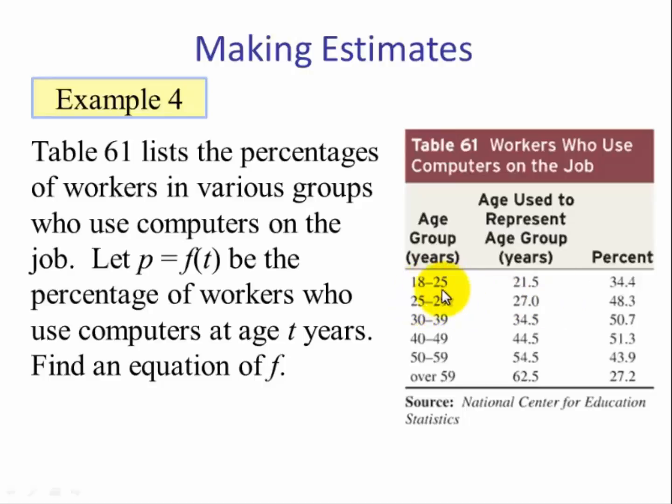So this is the age group, ages 18 to 25. And for the model we will use 21.5 to represent this age group. And the percentage in this case is 34.4%. So this will be our independent variable. This will be our dependent variable.